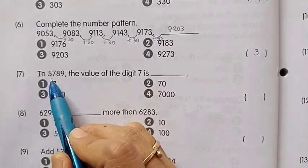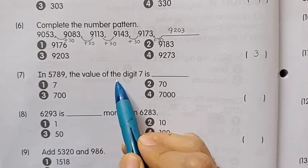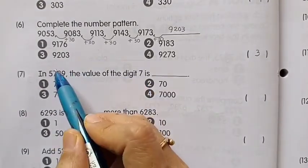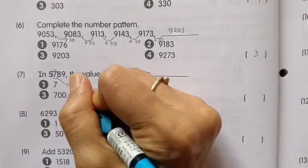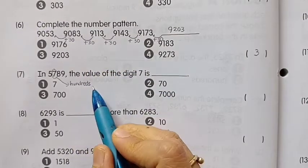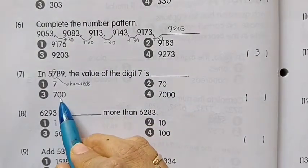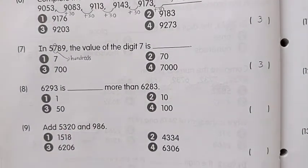Number 7: In 5789, the value of the digit 7 is... Look here, 7 is in the hundreds place. So the value of 7 is 700. The answer is number 3.